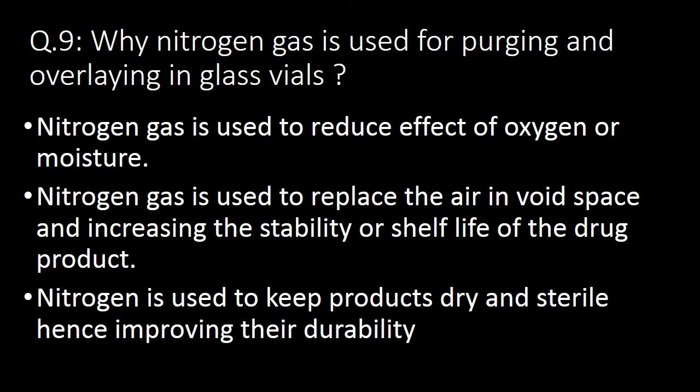Next important question: why is nitrogen gas used for purging and overlaying in glass vials? Nitrogen gas is used to reduce the effect of oxygen or moisture. Nitrogen gas is used to replace the air in void space, increasing the stability and shelf life of the drug product. Nitrogen is used to keep products dry and sterile, hence improving their durability.